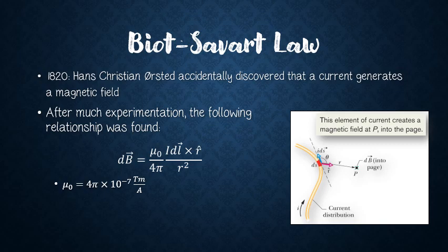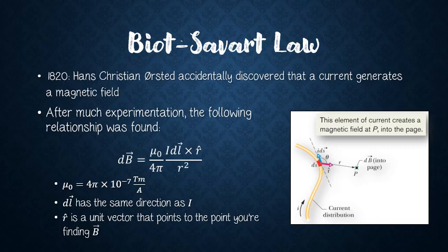A few things about this equation: first, mu naught is a constant equal to 4 pi times 10 to the negative 7 tesla·meters per ampere. Second, dL is our small length vector of the wire, with the same direction as the current, analogous to the length vector in the magnetic force expression. Lastly, r-hat is a unit vector — meaning it has a length of one — and it points from the wire to the point where you're trying to find the magnetic field.